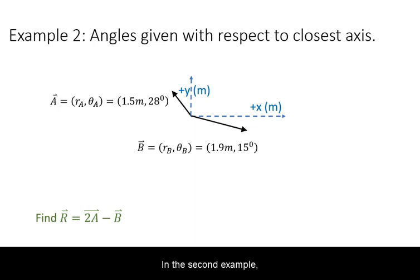In the second example, you are asked for the resultant 2A minus B. The angles of each vector are initially given with respect to the closest axis.